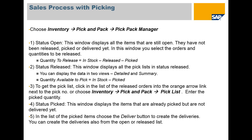To get the pick list, click in the list of released orders on the orange arrow link next to the pick number and choose Inventory, Pick and Pack, Pick List. Then you can enter the pick quantity. The pick status displays the items that are already picked but not yet delivered. In the list of picked items, choose the Deliver button to create deliveries. You can also create deliveries from the open or release list.